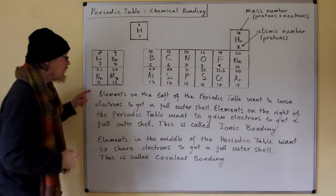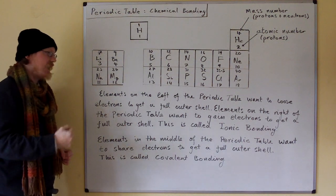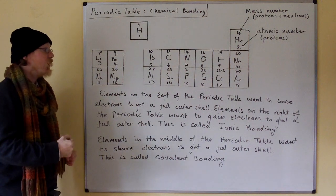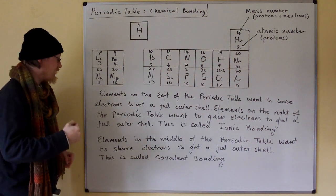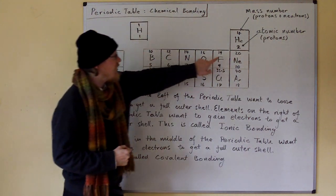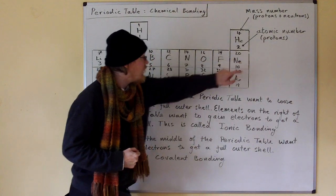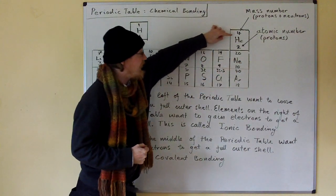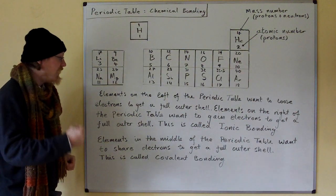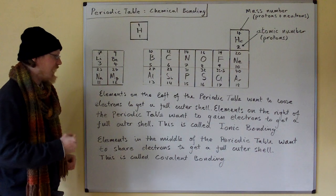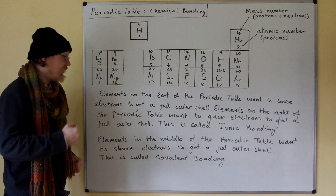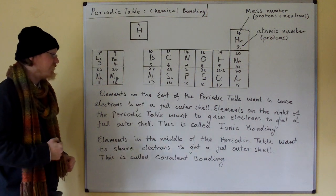Elements on the left of the periodic table want to lose electrons to get a full outer shell. Elements on the right want to gain electrons to get a full outer shell. This is called ionic bonding — so lithium might give its electron to fluorine; fluorine would become like neon, and lithium would become like helium. Elements in the middle of the periodic table want to share electrons to get a full outer shell. This is called covalent bonding.